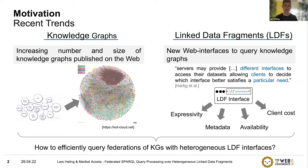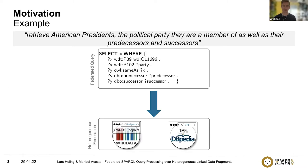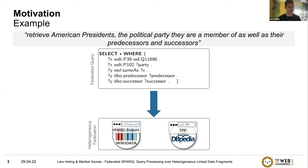Let's take a look at an example. Assume we want to retrieve American presidents, the political party they are a member of, as well as their predecessors and successors. We can formulate this as a federated SPARQL query and evaluate it over a heterogeneous federation — in this example, the public SPARQL endpoint of Wikidata and the triple pattern fragment server for DBpedia.